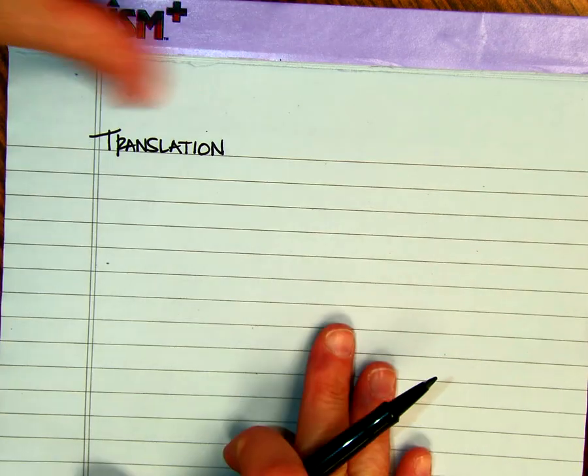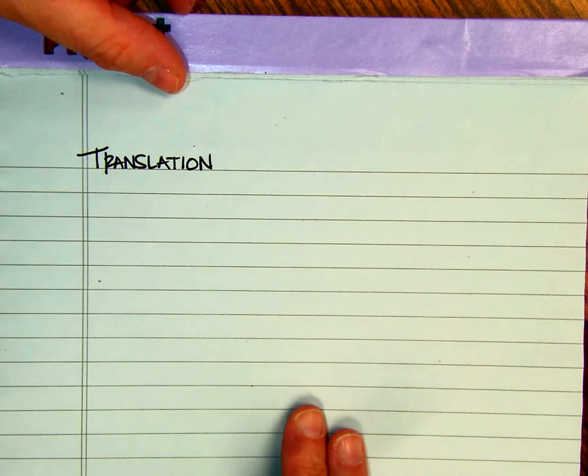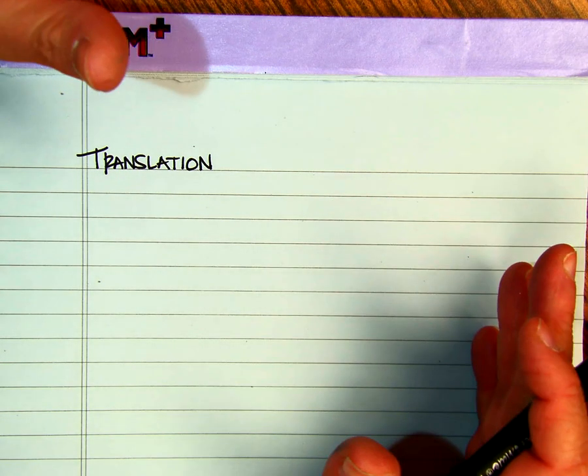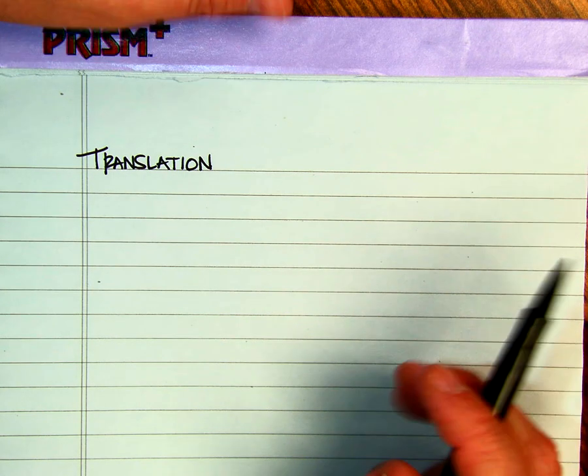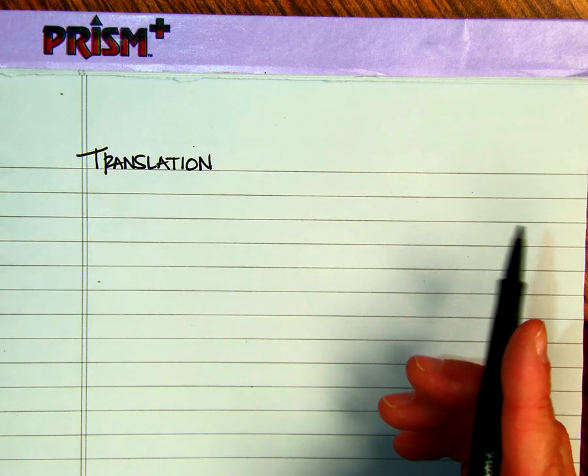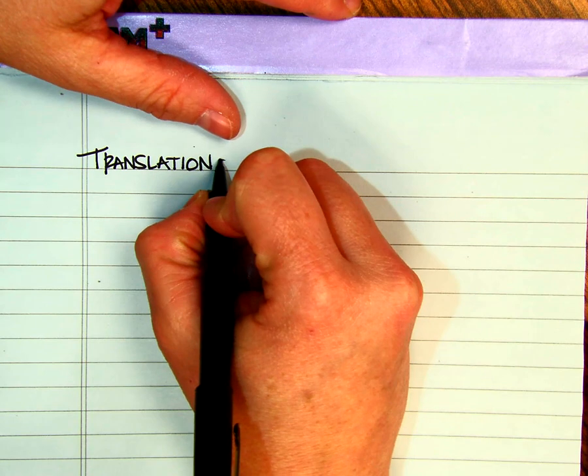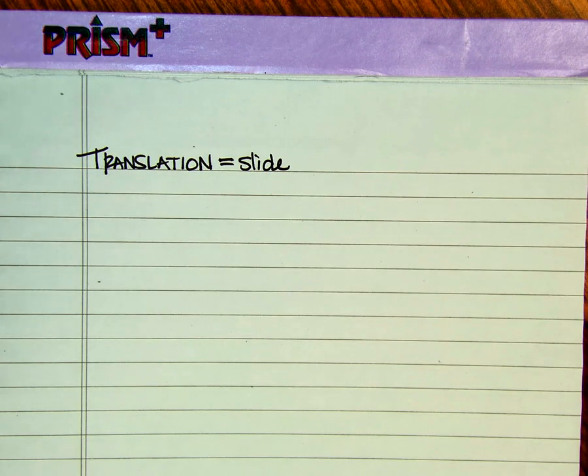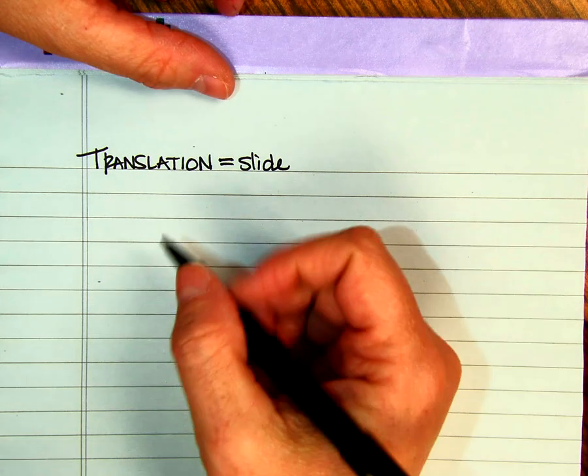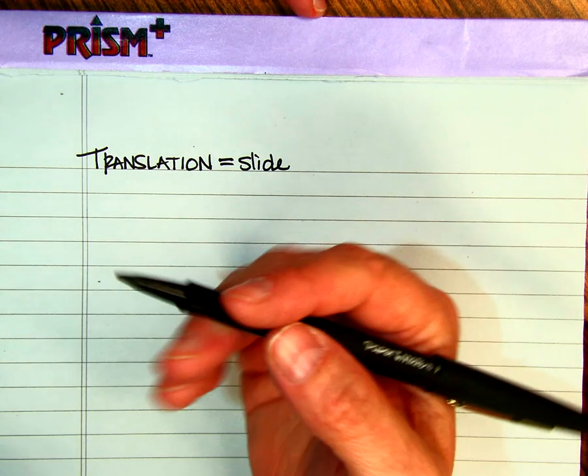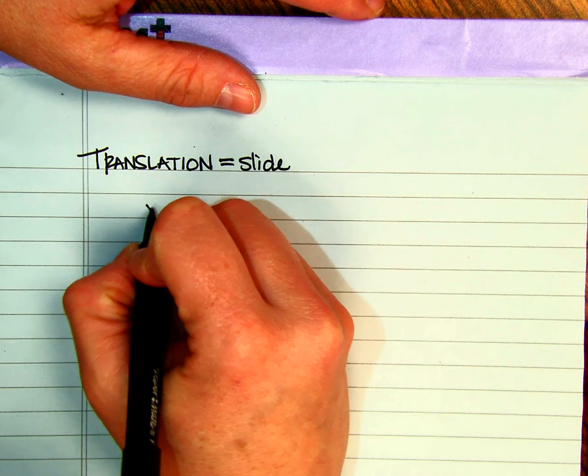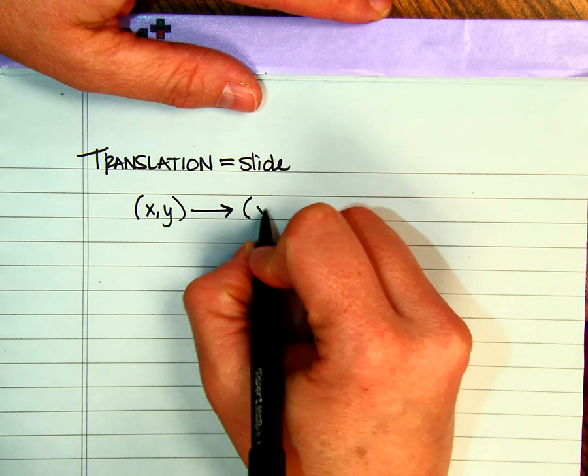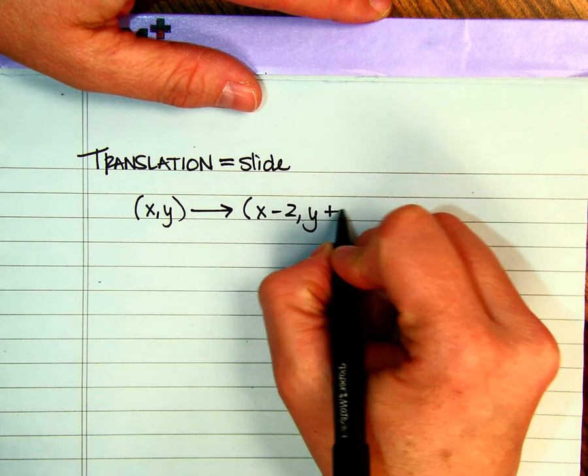Okay, so right now we are going to specifically talk about a translation. Your book does some different things with notation. I am not going to stress the different notation. Remember, a translation is also called a slide. So we are taking a figure, then we are sliding it to a different location. The way that typically you see it, you'll see a rule, and it will say something like x minus 2 and y plus 1.